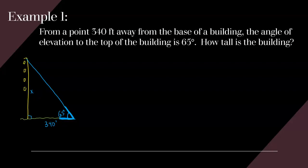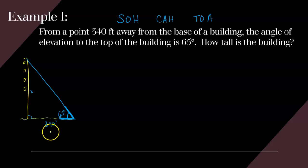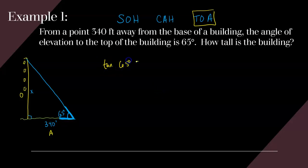We're dealing with right triangle trig, so we use those ratios — SOH-CAH-TOA. Based on the 65-degree angle, the 340 feet is adjacent to that angle, and the height X is opposite the angle. The ratio that uses the opposite and adjacent sides is tangent. So we write: tangent of 65 degrees equals the opposite leg X over the adjacent leg 340.